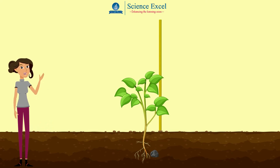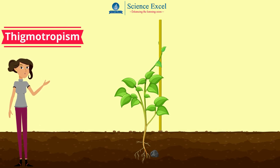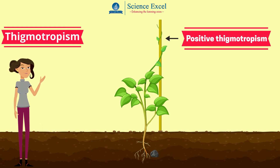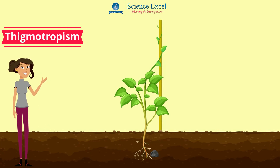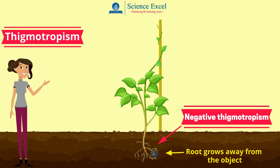This causes the tendril to circle around the object and thus cling to it. These growing or developing movements made by plants in response to contact with a solid object are called thigmotropism. The growth of the tendril is an example of positive thigmotropism, whereas when an elongating root comes in contact with an object, for example a rock, it shows negative thigmotropism as it grows away from the object.